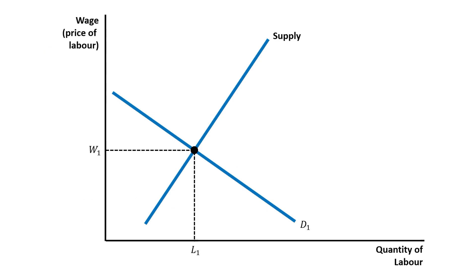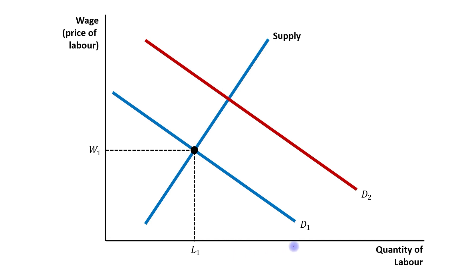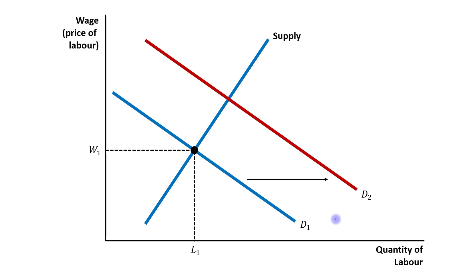The increase in demand for labor leads to a rightward shift in the demand curve for labor — from D1 to D2. The new equilibrium will be achieved at the intersection point of this new demand curve and the initial supply curve.